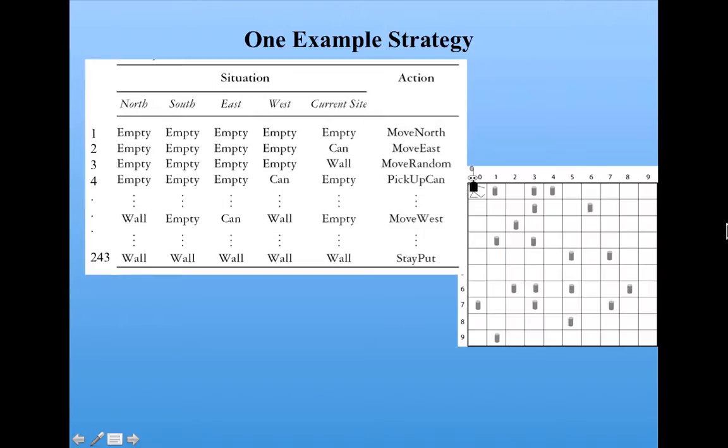So if we look back at our first picture, we see that Robbie finds himself in this situation: Wall to the north, empty south, can to the east, wall to the west, empty current site. And I filled in move west.